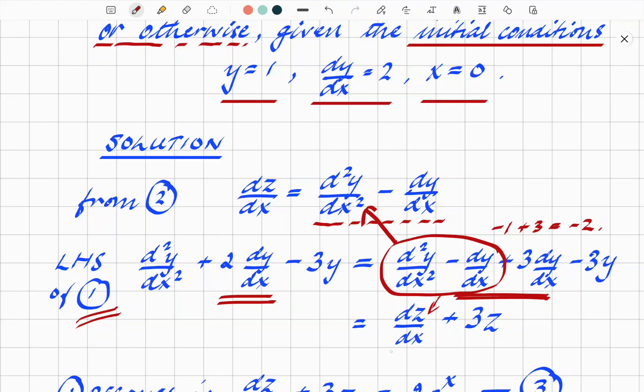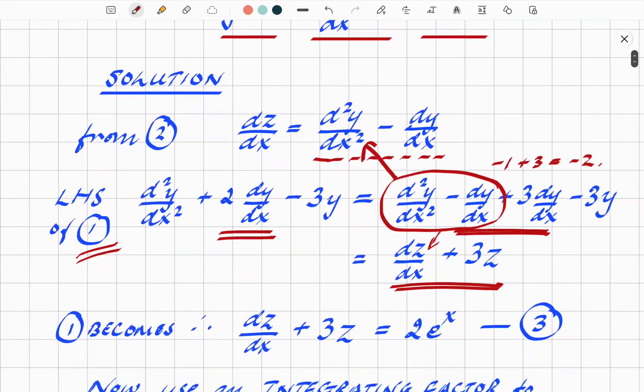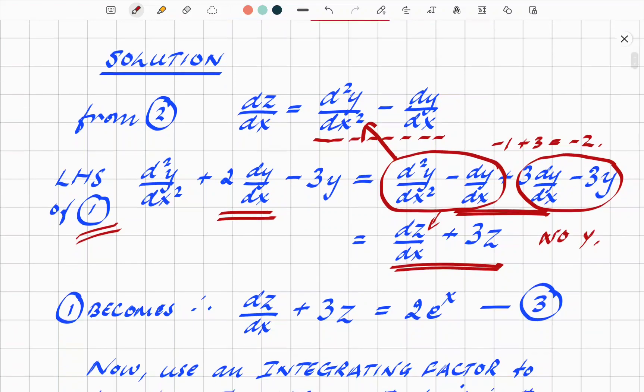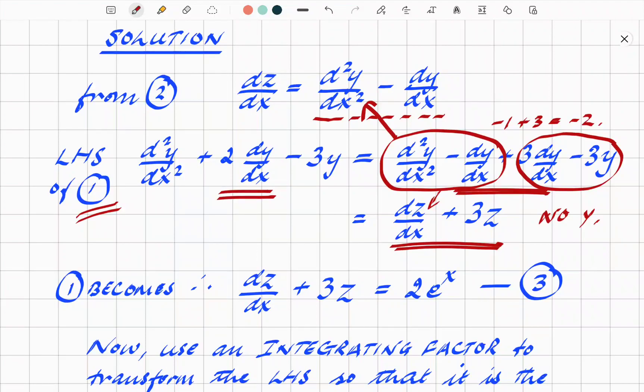Why are we doing that? It's because we can then directly replace the d²y/dx² - dy/dx with the dz/dx. So we're rewriting that first equation, and these two parts effectively come out to be dz/dx + 3z. So we have eliminated y. This gives us a first-order differential equation. The whole effort there is to turn a second order into a first order, so it's simplified the whole equation by one level. That's our equation 3.